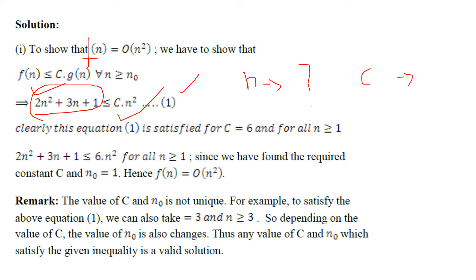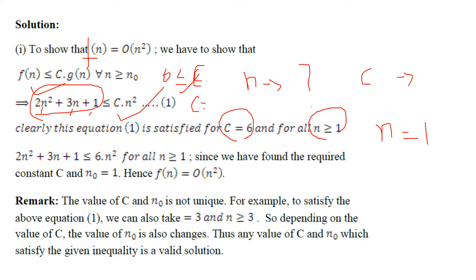By trial and error, let's start with n = 1. If you substitute n = 1, you get 6 ≤ c times 1², which is 1. So for c = 6 and n ≥ 1, the inequality is satisfied — in fact it will be exactly equal. For all n ≥ 1 and c = 6, this could be one case to start with.